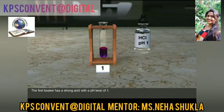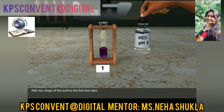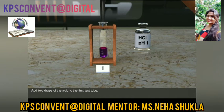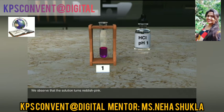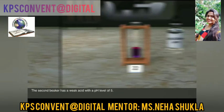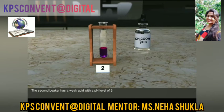The first beaker has a strong acid with a pH level of 1. Add 2 drops of the acid to the first test tube. We observe that the solution turns reddish pink.